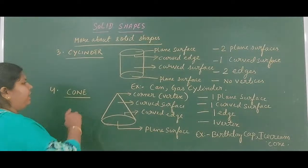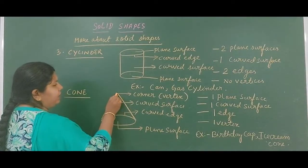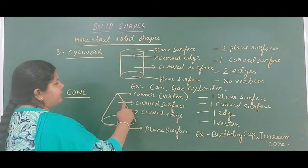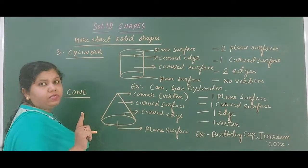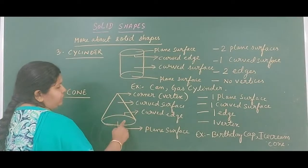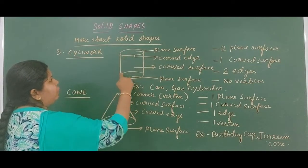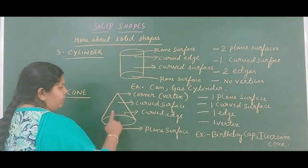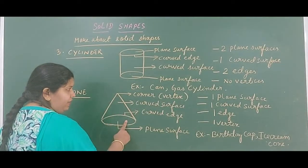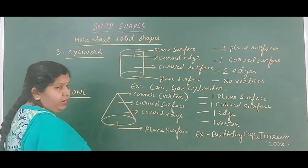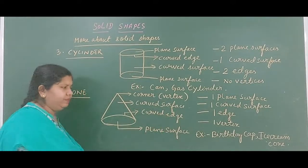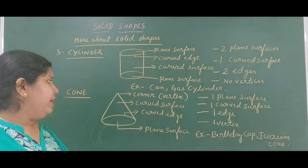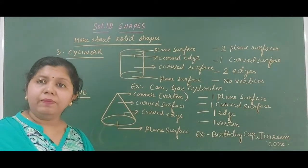Let us come to the next figure — a cone. This cone has a pointed tip, which is the vertex of the cone. Like the cylinder, there is a curved surface. A cone has 1 curved surface and 1 curved edge. Examples of a cylinder are a can, gas cylinder, or water bottle. Examples of a cone are a birthday cap, ice cream cone, or funnel.